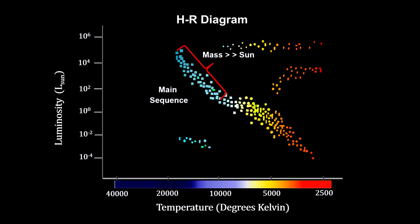Protostars that are many times the mass of the Sun evolve so rapidly that they show up at the high blue end of the main sequence in a short amount of time. For them, there is no T-Tauri phase.